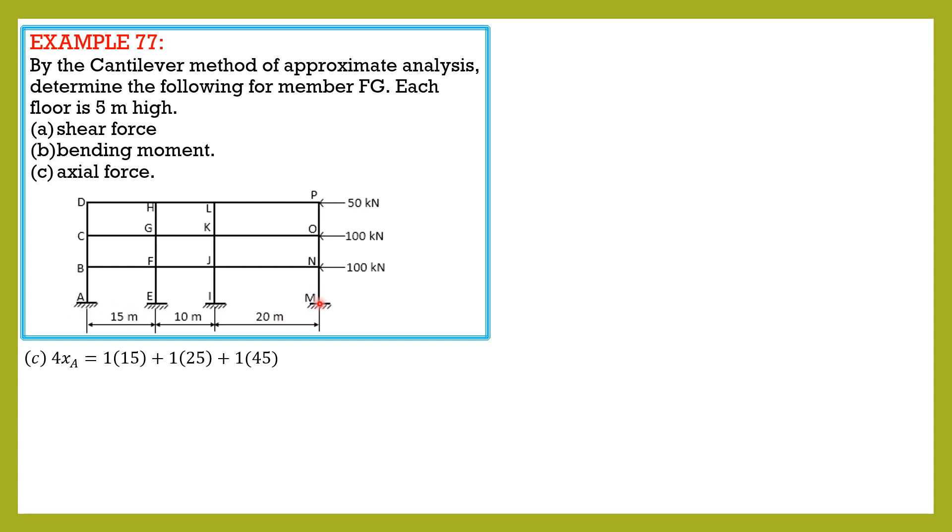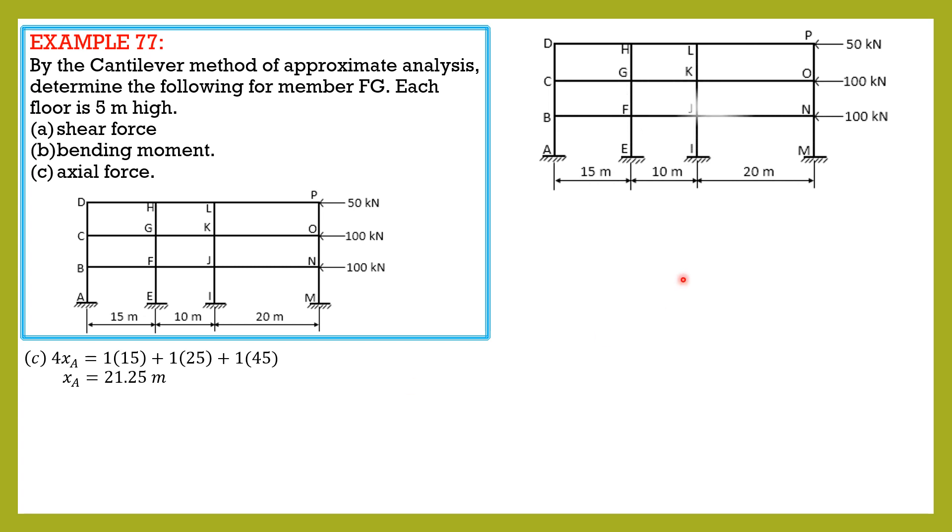This column here, 1 times 15, plus the area of this column 1 times 25, plus the area of this column 1 times 45. So XA equals 21.25 meters. Having found the location of the centroid of column areas, which is true for all floors, this is XA 21.25.